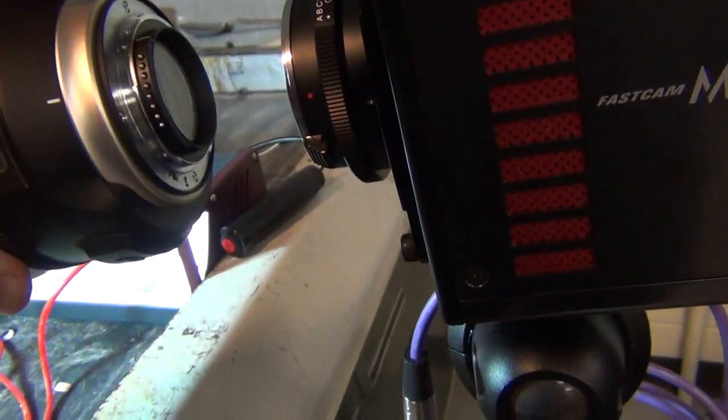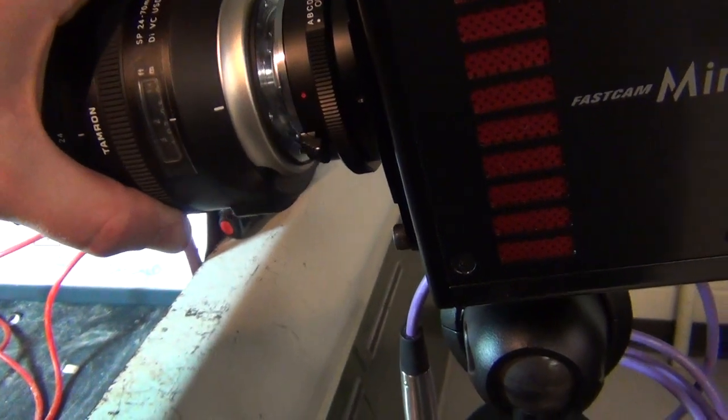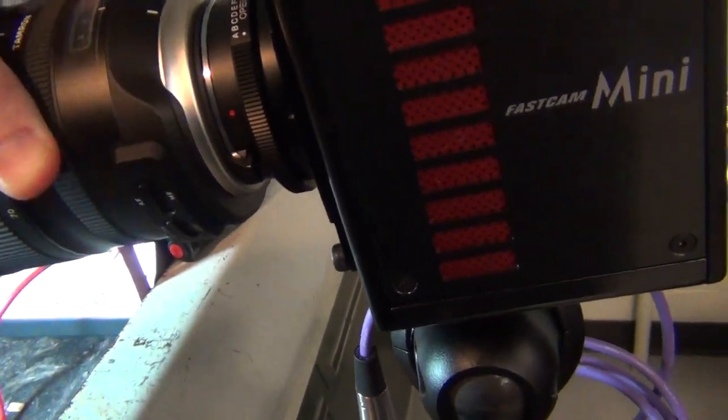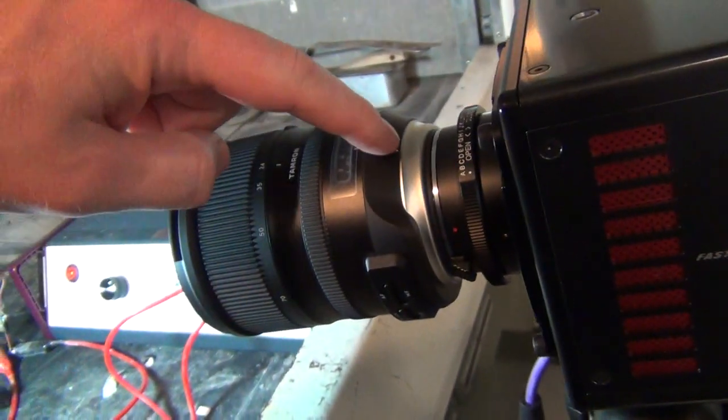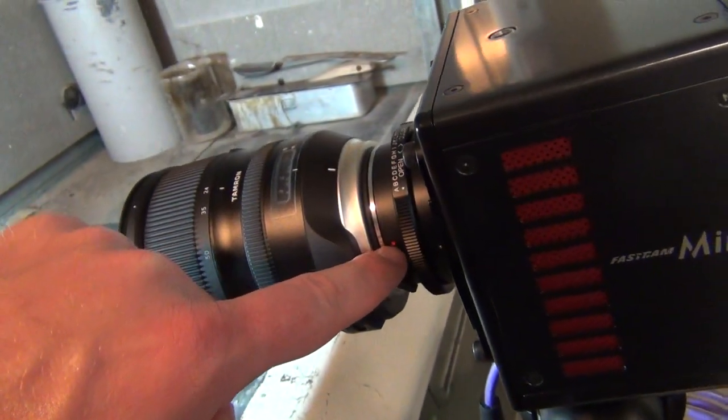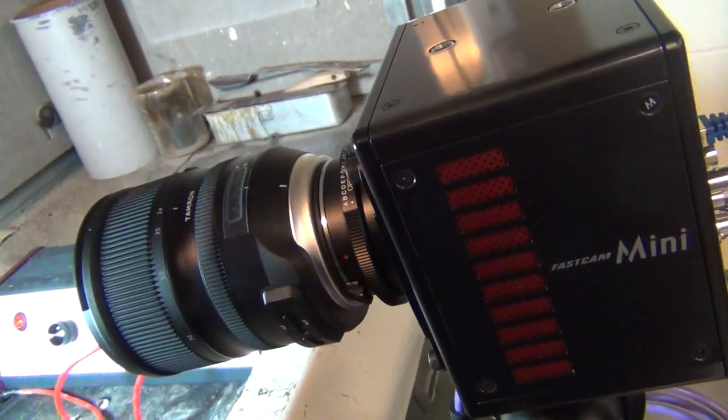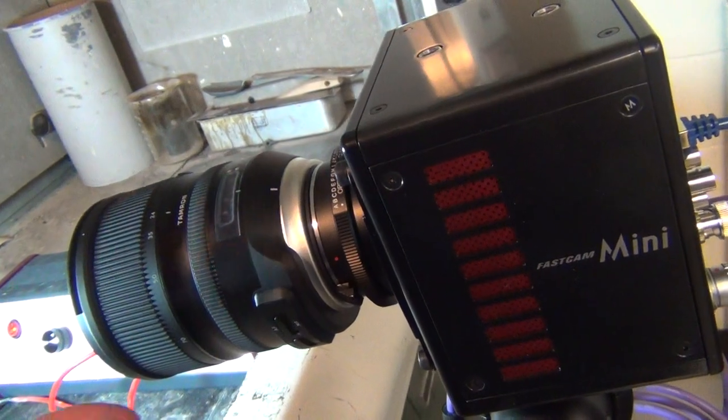You'll notice there's a white sort of dash and a red dot. A white dash here on the lens and a red dot on the camera, and those two line up. That's when the lens is ready to attach.